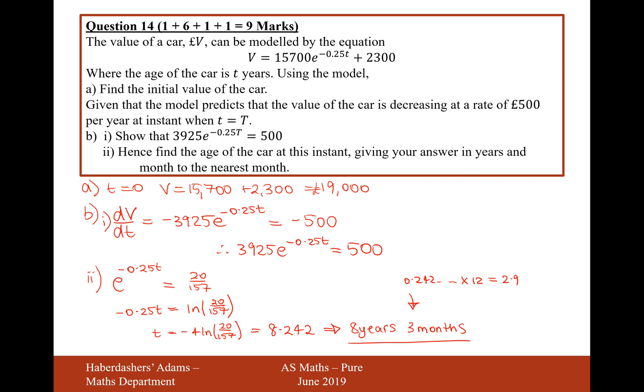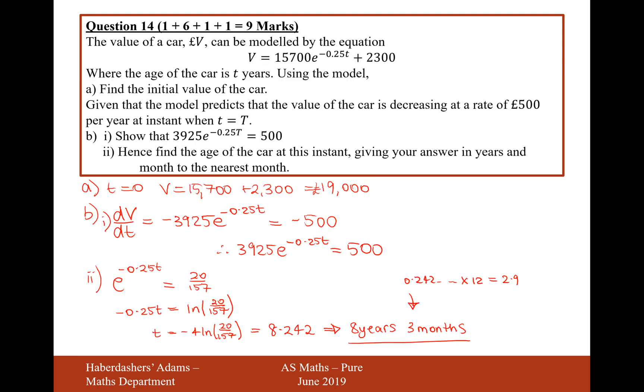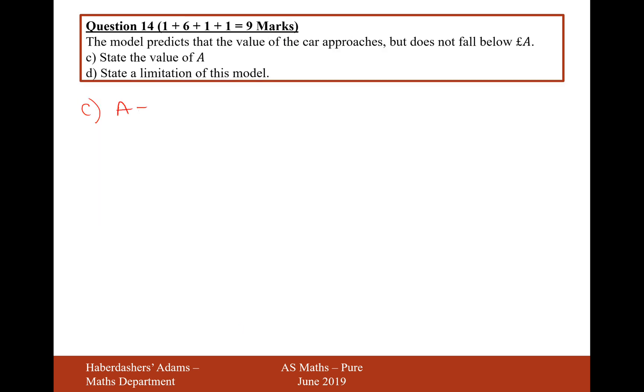Moving on to part C and part D, the model predicts that the value of the car approaches but does not fall below A. It states the value of A. That's going to be the little bit that is added at the end. It's going to be 2,300 because this value here will decrease towards 0 if you let time continue on and on, but then it's plus 2,300. So therefore, A equals 2,300.